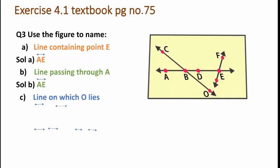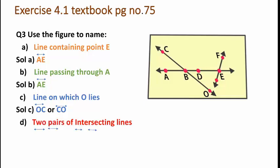Next, you have to name the line on which O lies. Looking at the figure carefully, the line on which O lies is line OC, or line CO — either way you can write your answer.